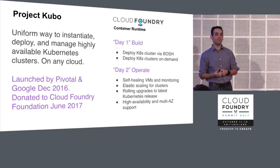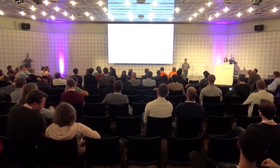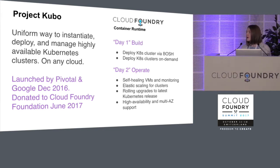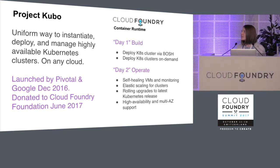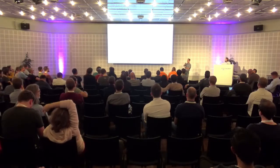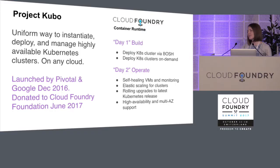That's why we started working on Project Kubo, which is a BOSH release for Kubernetes. It provides a uniform way to deploy and manage highly available Kubernetes clusters, and it works on any cloud as BOSH works on any cloud. It uses BOSH to deploy and manage the cluster once it's deployed. This is a project that Google and Pivotal started working on in December, donated to the Cloud Foundry Foundation in June at the last CF Summit. And it just became Cloud Foundry Container Runtime, as of this morning. So it's now Cloud Foundry Container Runtime and Cloud Foundry Application Runtime — but Kubo is easier to say.